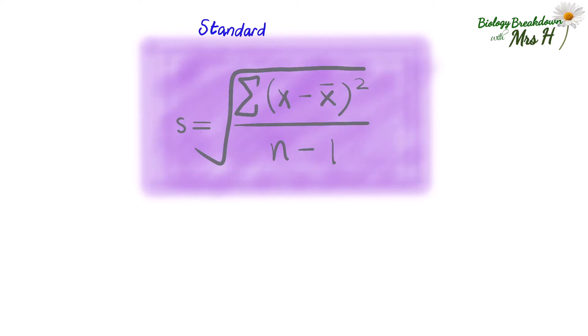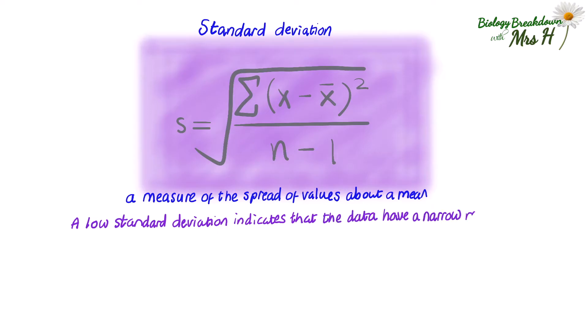Standard deviation is a measure of the spread of values about the mean. It tells you how much the values in a single data sample vary. A low standard deviation indicates that the data have a narrow range and the data points are closely grouped to the mean. This shows greater precision.